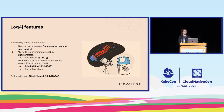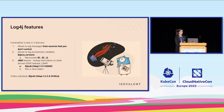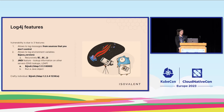The third feature is JNDI, which is actually a Java feature. It allows you to look up information on other servers — for example, DNS lookups or LDAP lookups. You can put an LDAP server address, and Log4j will connect to that server, look up that information, and log what was returned. What's interesting is that it can return a Java object. So if the information on the LDAP server is a Java object, Log4j will return that Java object and happily run it.